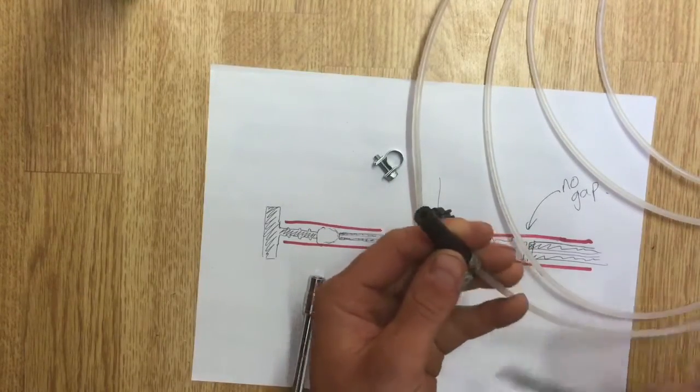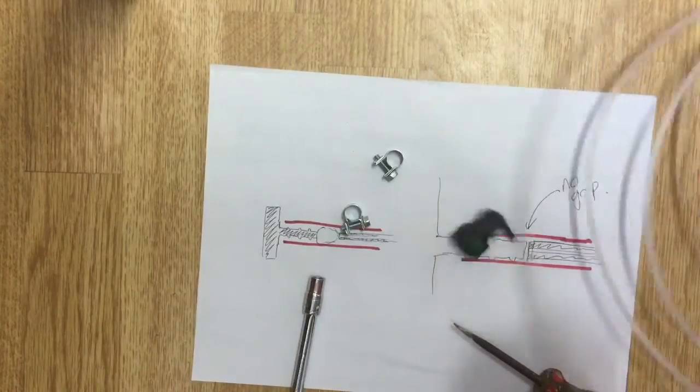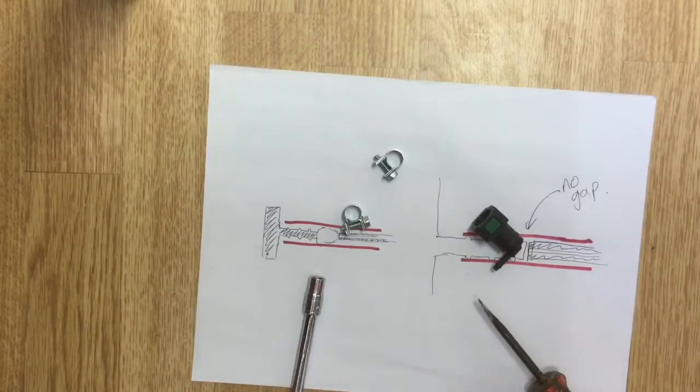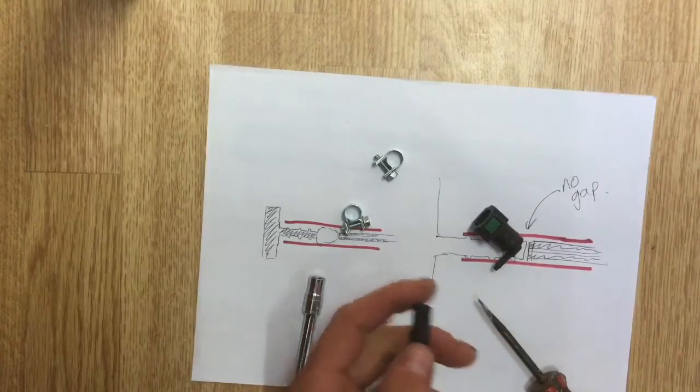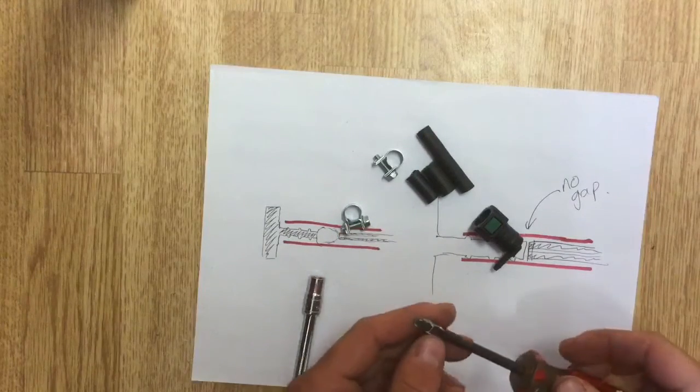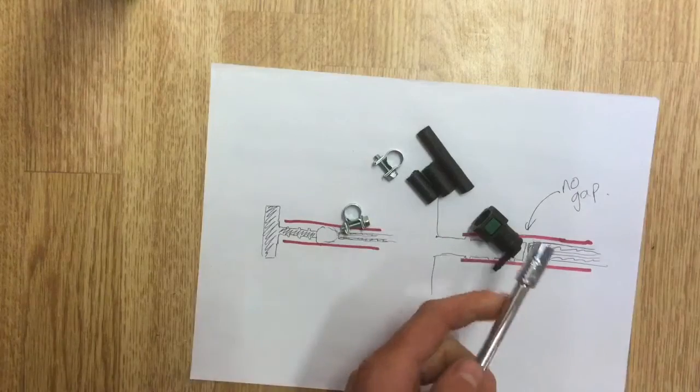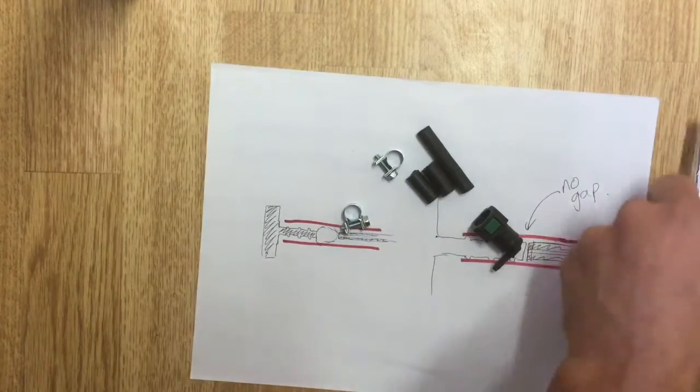If you're taking an Erbospace unit off of an existing vehicle and transferring it onto yours, then just use whatever they've had in situ. It's obviously worked in the past. And if you're getting it new you will get pipe sent through with your Erbospace unit. So I would just use what is sent through in your installation kit.